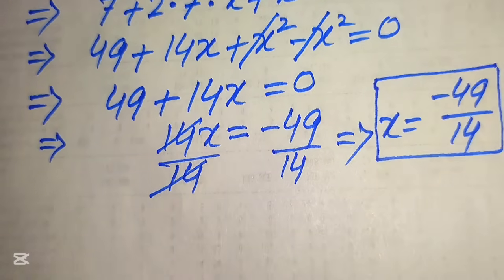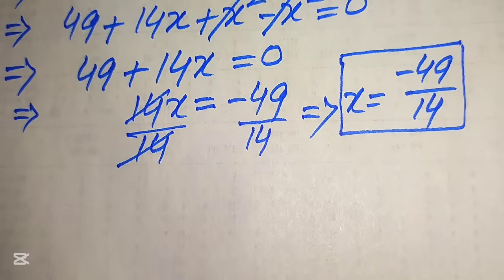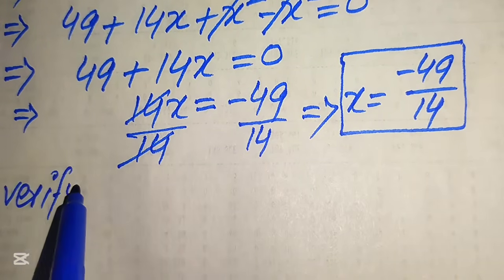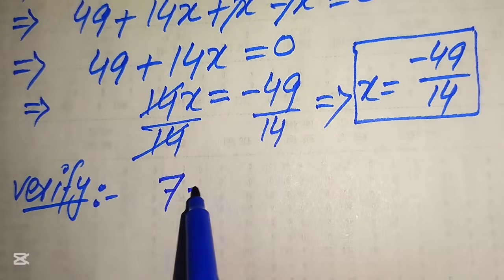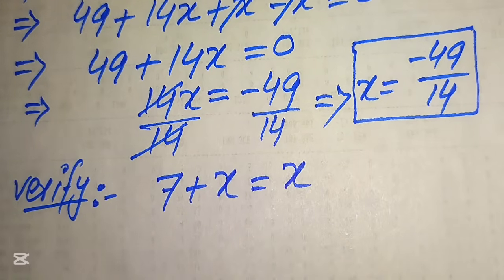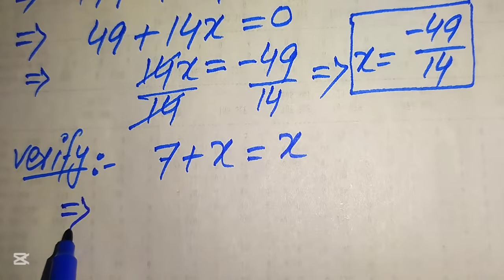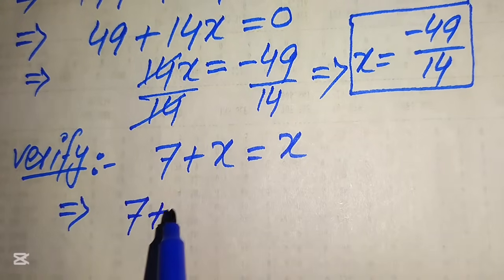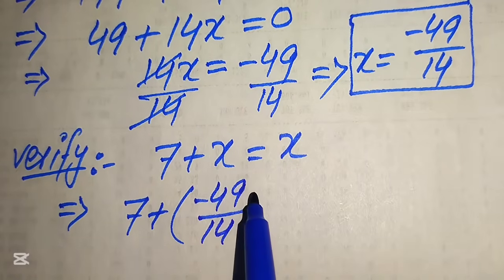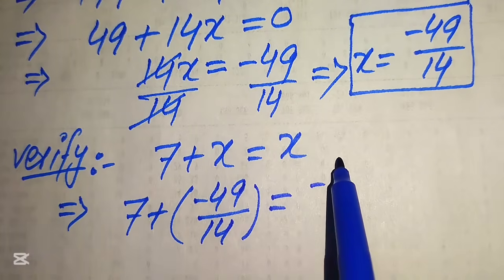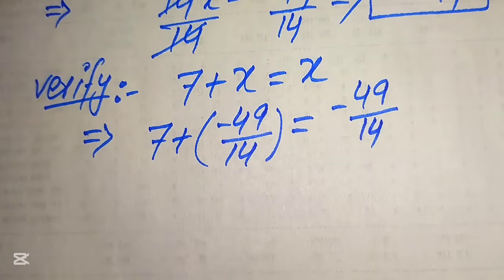In the next step we verify whether this value of x satisfies the original equation. We copy down the given statement: √(7 + x) = √x. We substitute x = −49/14 on both sides and check: the left side becomes √(7 + (−49/14)) and the right side is √(−49/14).